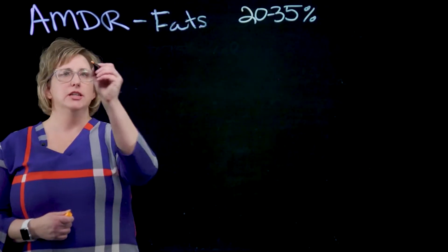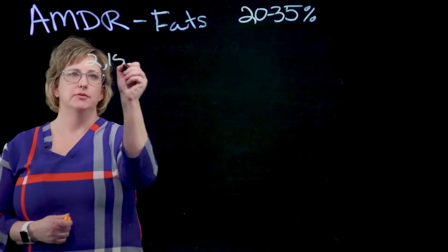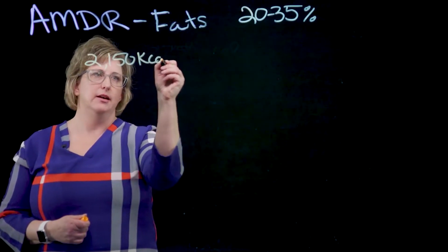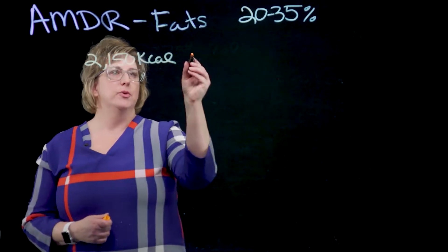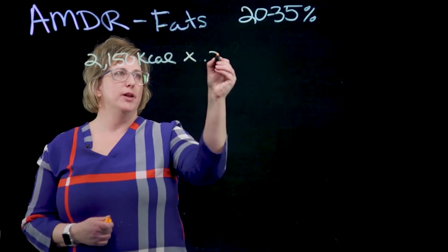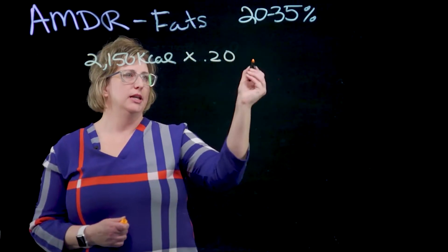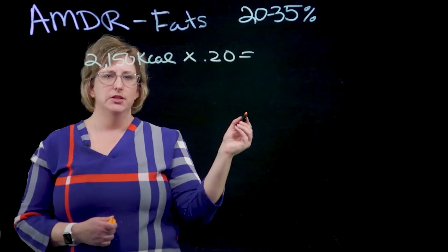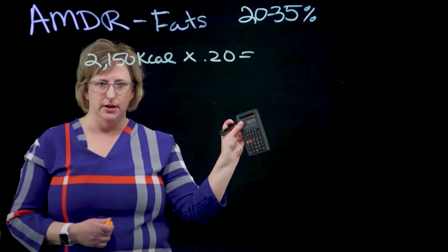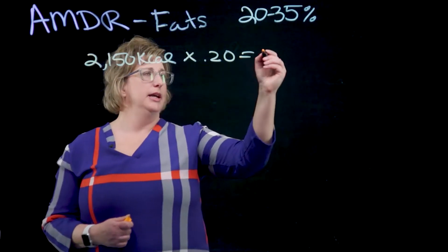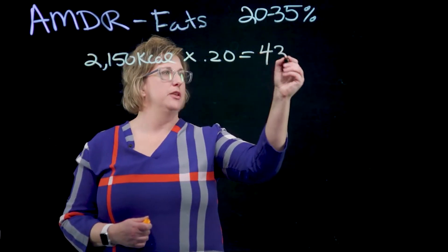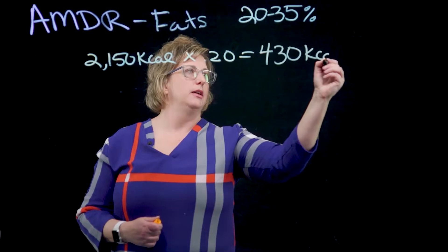So when we look at this, we're going to take our same person at 2,150 kcals and multiply it by the range at 20%. What do you get? Get your calculators out and let's do the math. I come up with 430 kcals.